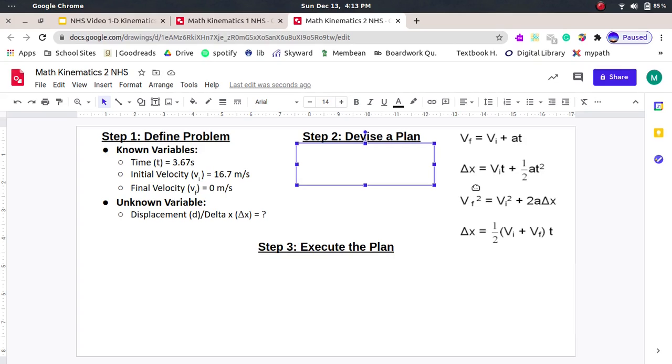Let's look at the second equation. Delta x, what we're trying to solve for. Vi, we know. Time, we know. A, we don't know. Therefore, we cannot use this equation either.